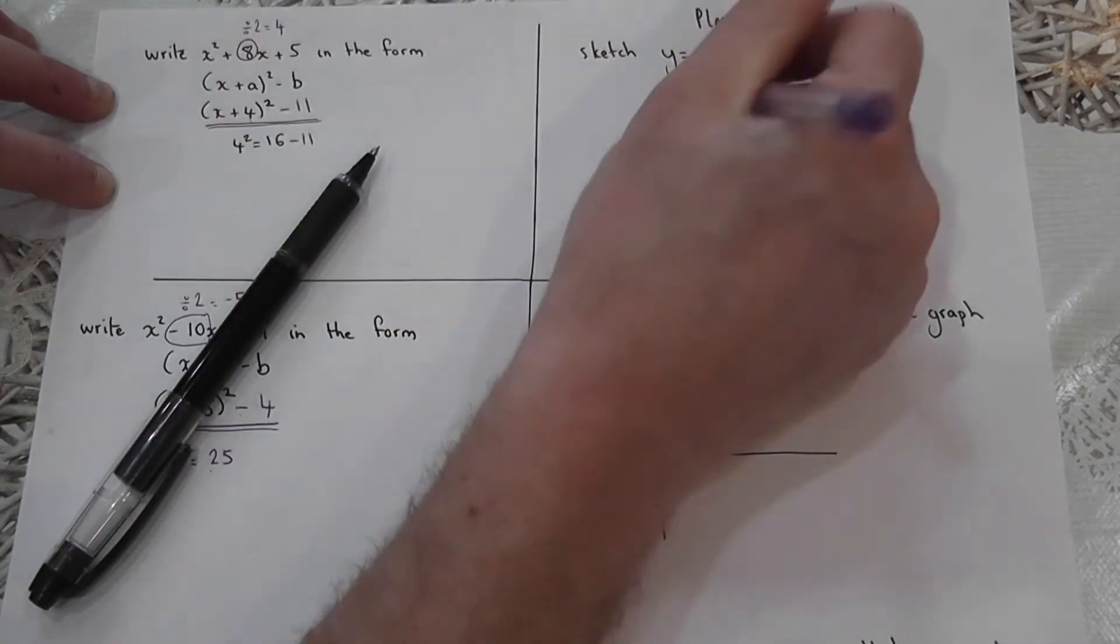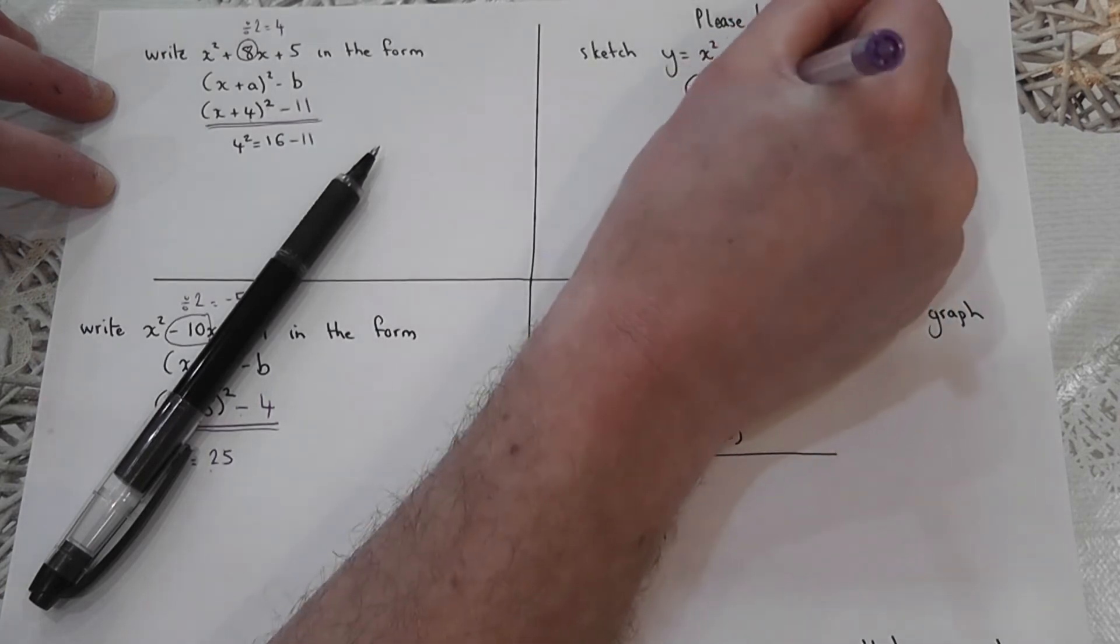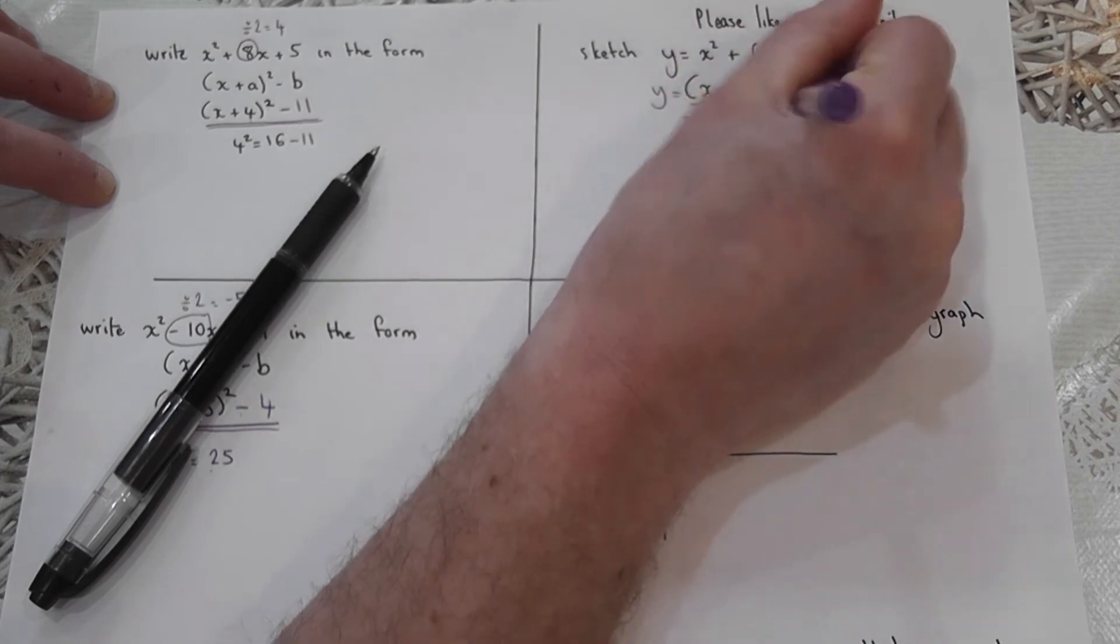Just to confirm why, three squared is nine. I want a 12. I've got to add a three to make it correct. So this has been written in the form x plus three squared plus three.